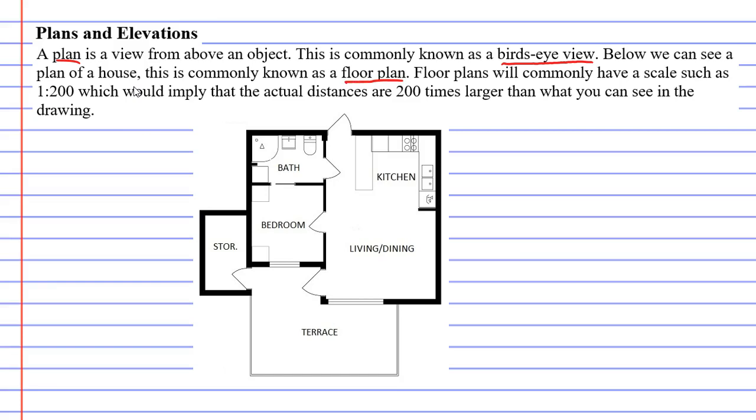Floor plans will also have a scale. That scale might be something such as 1 to 200, which basically means that everything you see in the plan is 200 times larger than that in real life.